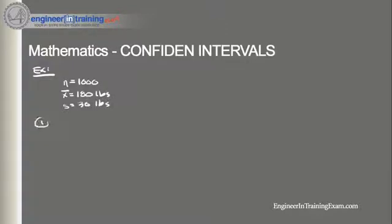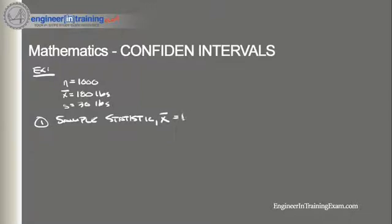Let's work through this problem using our four-step process. Number one, we need to identify a sample statistic. Since we are trying to estimate the mean weight in the population, we choose the mean weight in our sample — 180 — as our sample statistic. Step two, we need to select a confidence level, which has already been defined in the problem. They asked us to find the 95% confidence interval, so the confidence level is 95%.